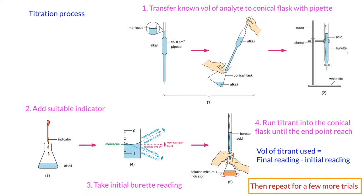So after that, do remember, we have to repeat for a few more trials. Because one off, for this one, maybe the result is not accurate. We need to take average for this. So this is basically a titration process, what we need to do.